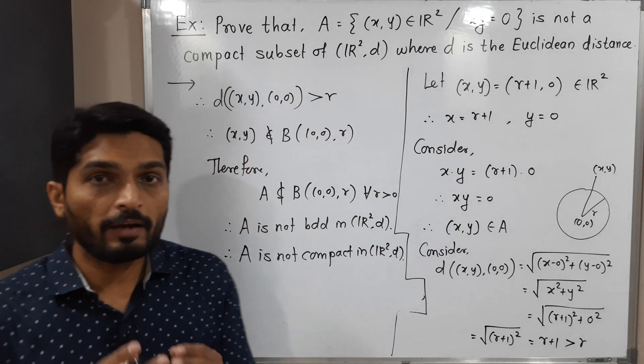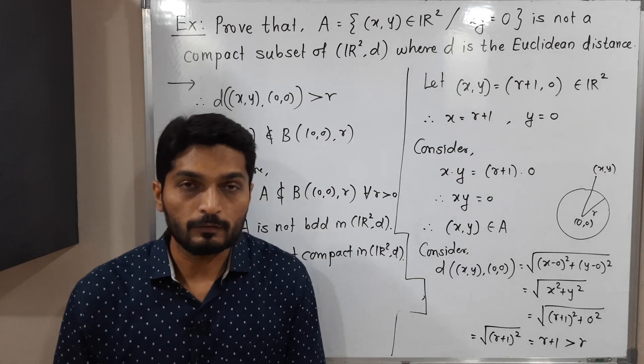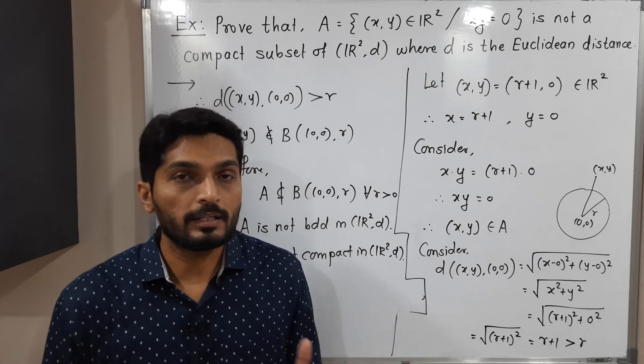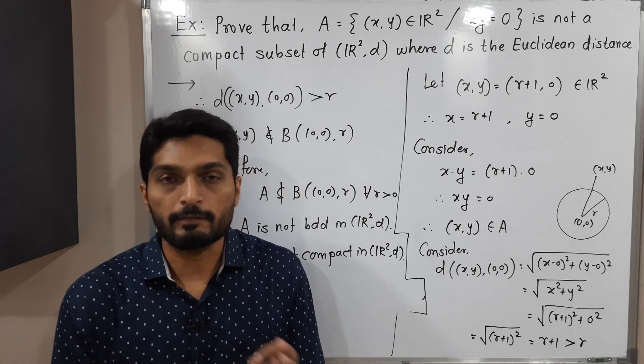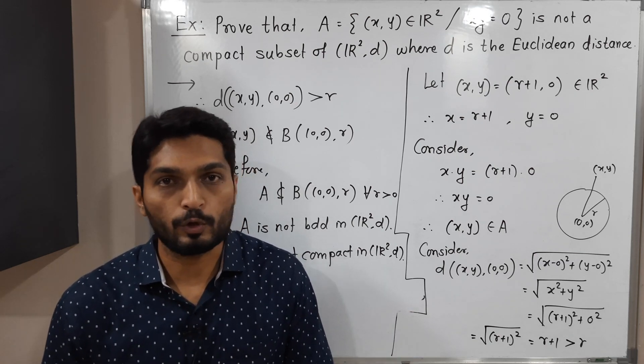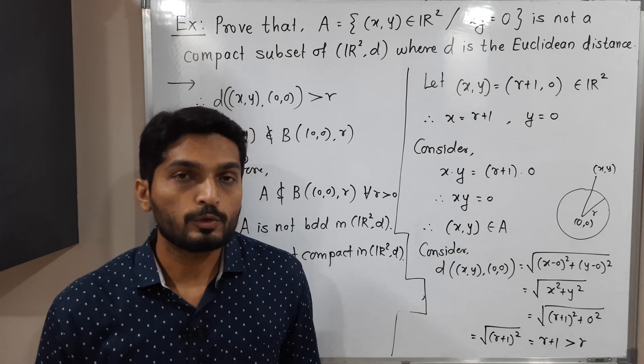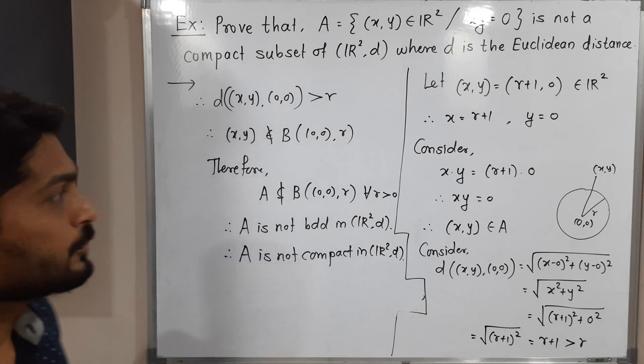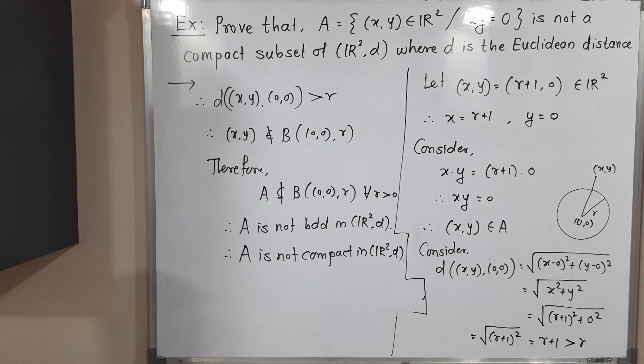So if you have any set which is not bounded or which is not closed in R²D, you can directly declare it is not compact. Using that result, we could solve this example.